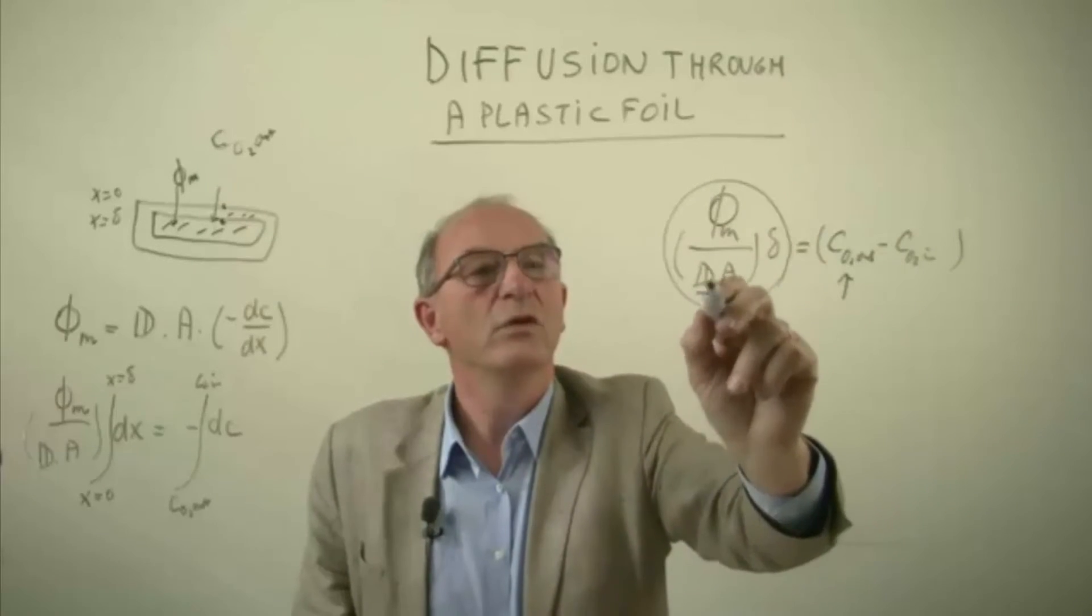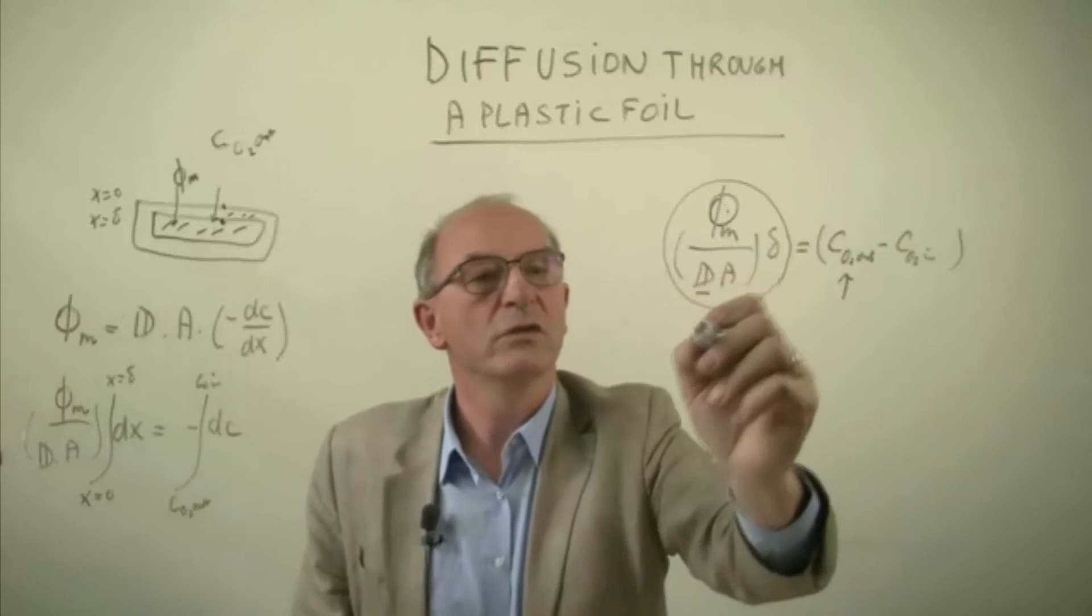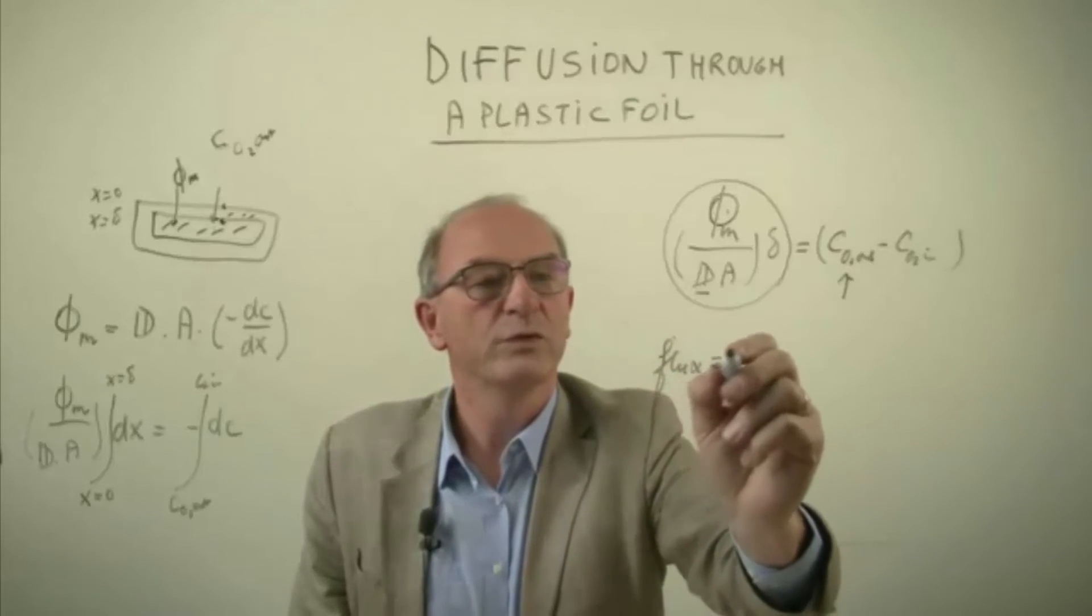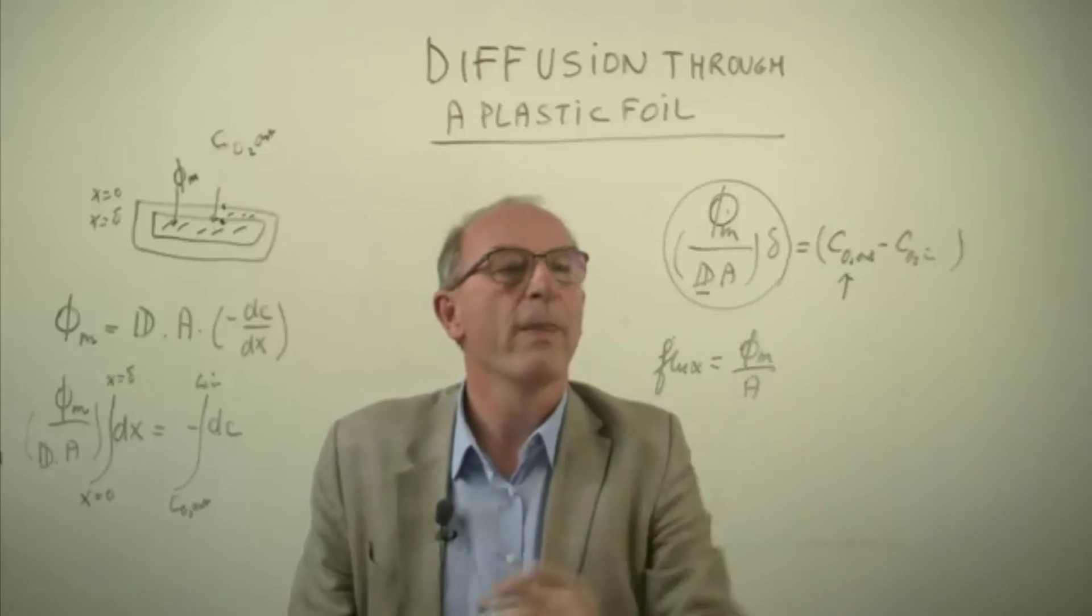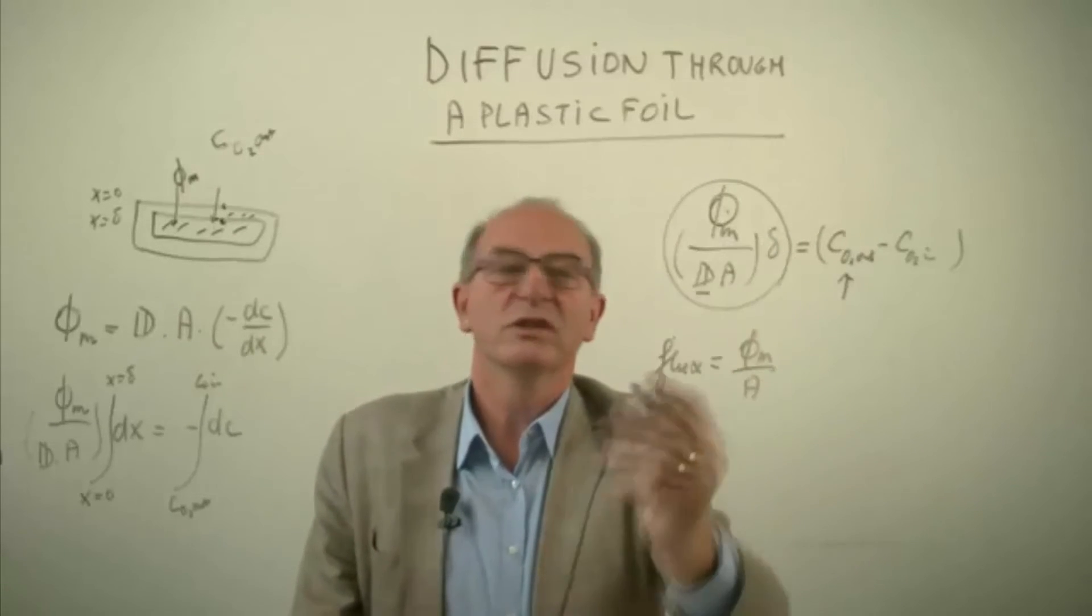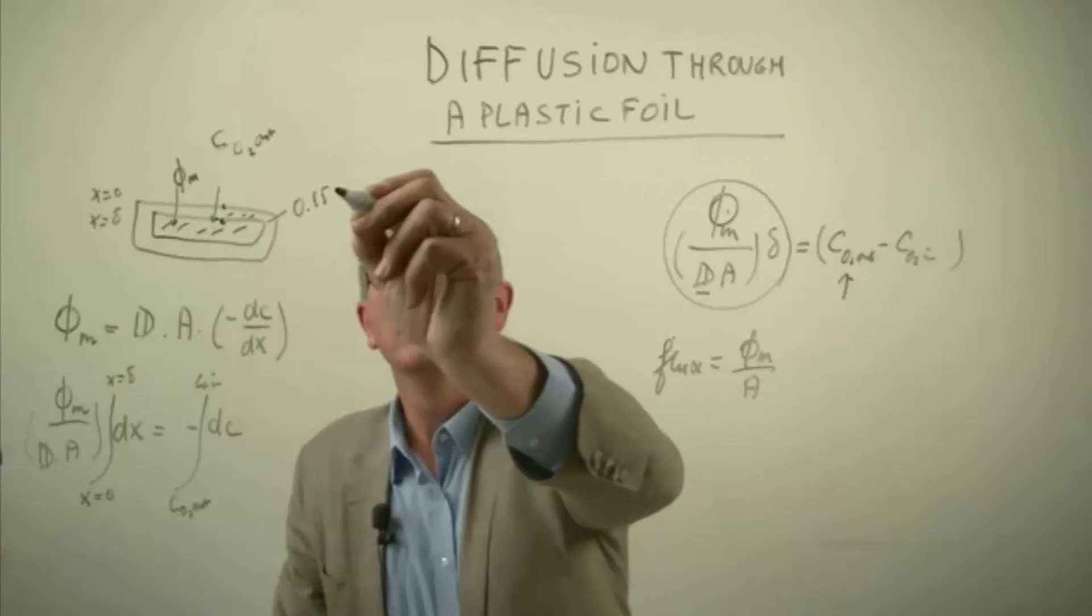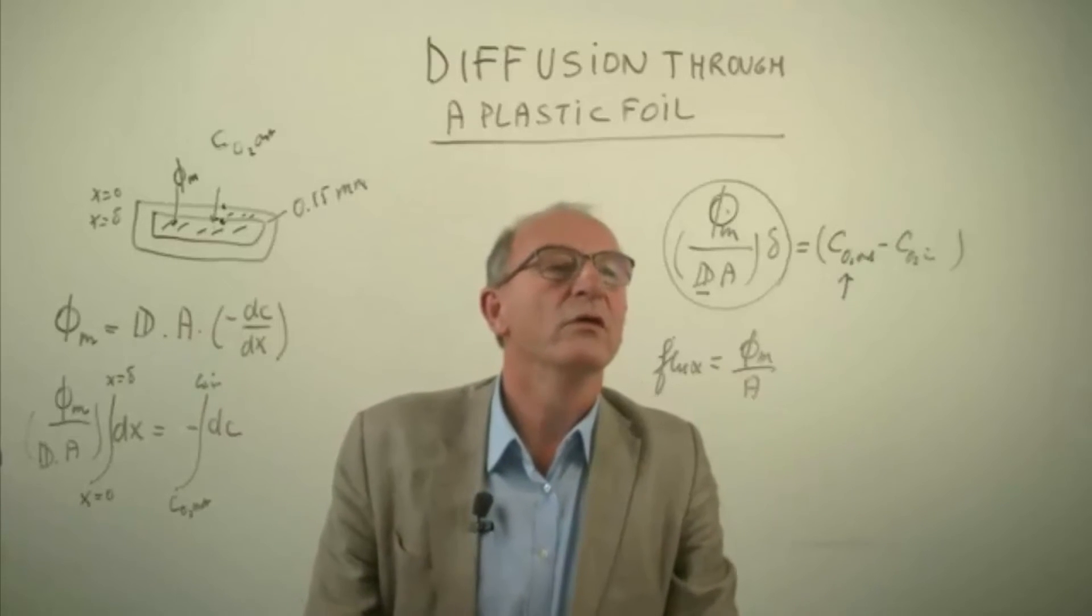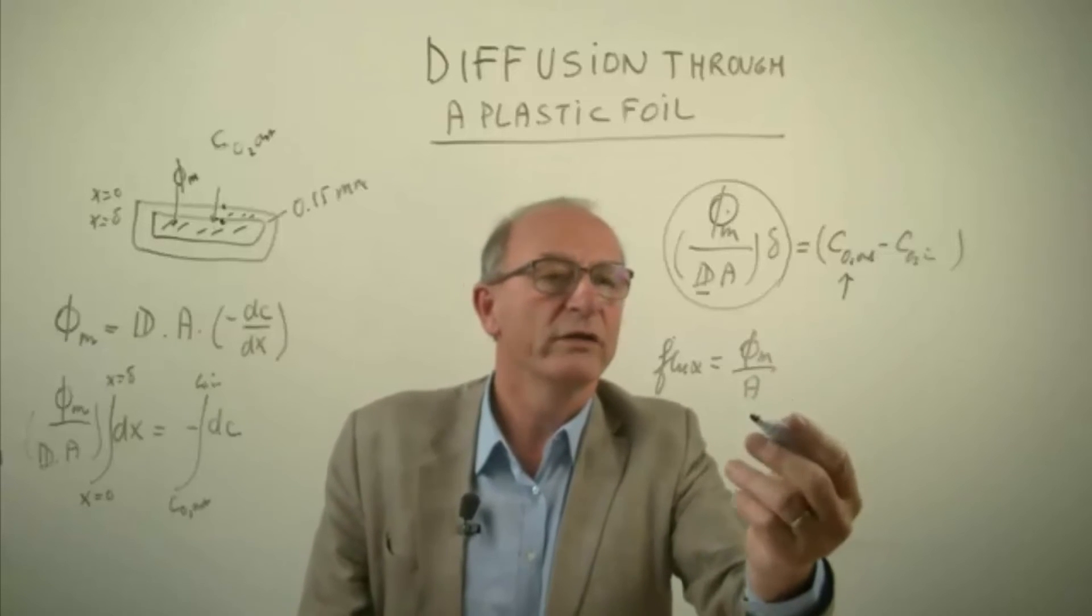We know the diffusion coefficient, we know the mass flow rate over the surface area which is often called the flux, which we call the mass flow rate divided by the surface area. Well if these are all known and we know the thickness which is let's say 0.05 mm, then we have to calculate the oxygen concentration at the outside. How can we calculate this one?